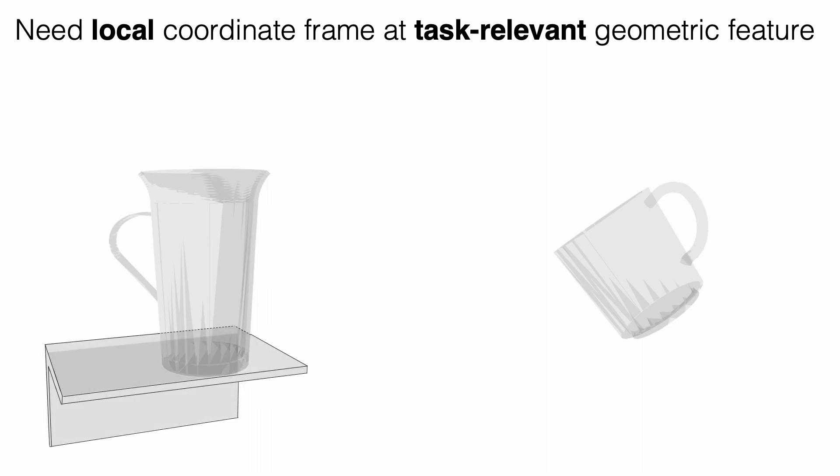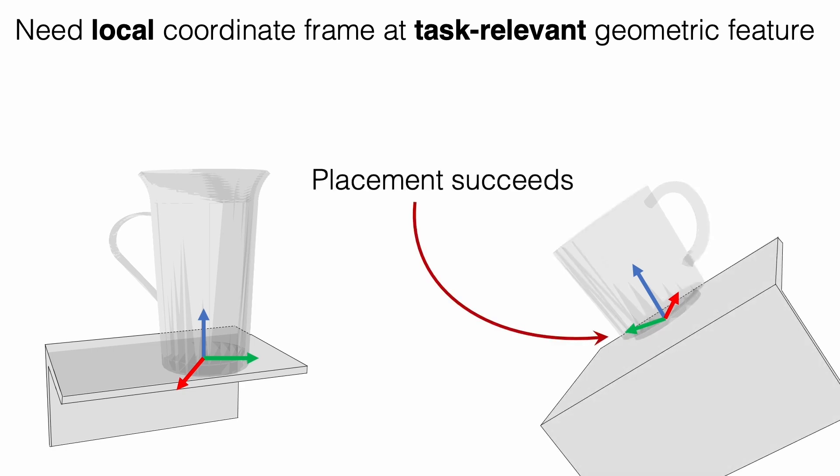However, the local feature is task-specific, so we must be able to attach local frames at different local features. For instance, to place the mug on a shelf, we can attach a frame to the bottom of the mug, detect the corresponding frame, and align the shelf with the bottom of the new mug.